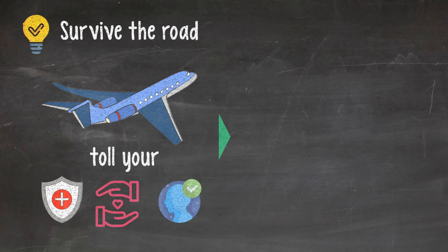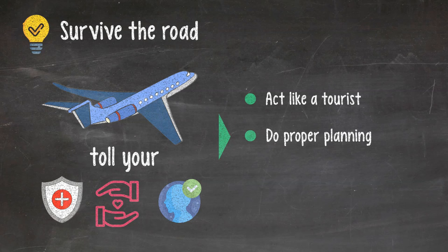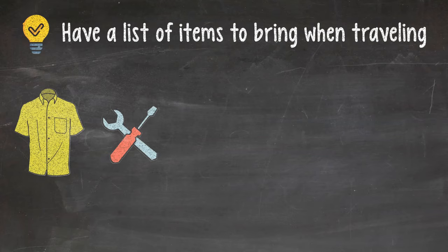Tip 2. Survive the road. Business travel may take a toll on your health, relationships, and sanity. How do you deal with it? Look at business travel as an adventure and act like a tourist. Do proper planning. These simple logistics steps can make a big difference. Lastly, treat everyone with tremendous respect. Trip 3. Have a list of items to bring when traveling. Here is the list. Categorized into clothing, tools, personal care items, organizing tools, and diversions. Please see the link in the description for the full list.